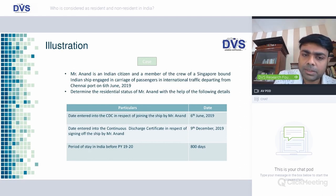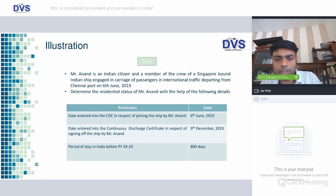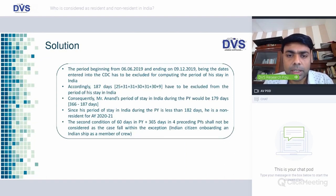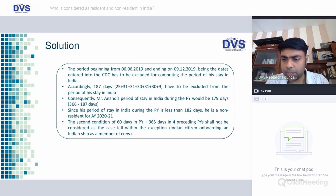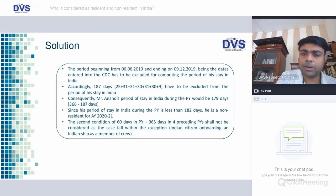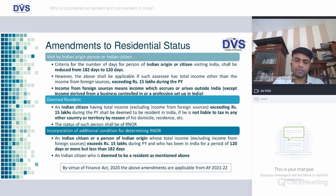Mr. Anand is an Indian citizen and crew member of a Singapore-bound ship carrying passengers in international waters. The ship departed on 6th June; CDC entry date is 6th June, and discharge certificate date is 9th December. Prior stay in India was 800 days. The period 6th June to 9th December — 187 days — is excluded under Rule 126. Therefore, his effective period of stay is only 179 days, and he is regarded as a Non-Resident since the 60-day criterion does not apply to him.